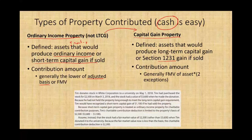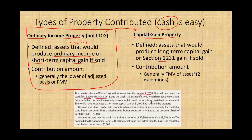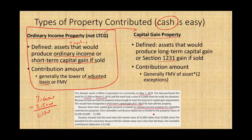Tim donated stock in White Corporation to a university on May 1st. Tim had purchased the stock for $2,500 on March 3rd — that's less than a year, so we're dealing with short-term ordinary income property. The stock had a fair market value of $3,600, giving a short-term capital gain of $1,100 if sold. Since short-term capital gain property is treated as ordinary income, Tim's charitable contribution deduction is limited to $2,500 — the lower of basis or fair market value. If the fair market value were only $2,300, we would use $2,300.